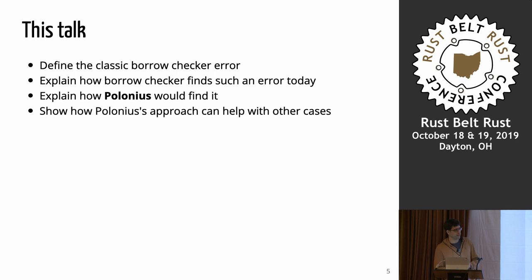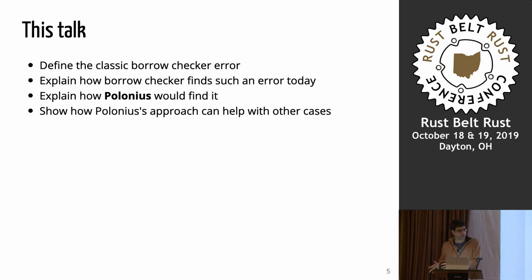What I'm going to do is go through the classic borrow checker error, decompose it, explain how the current borrow checker thinks and analyzes and finds errors like that, and then show how Polonius does it, and then show you why the Polonius approach allows us to accept more programs and has potential for the future to open even more doors.